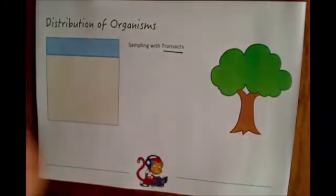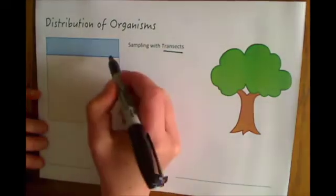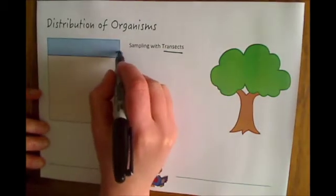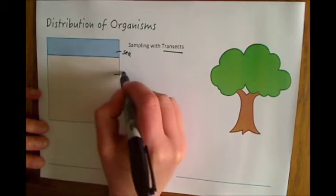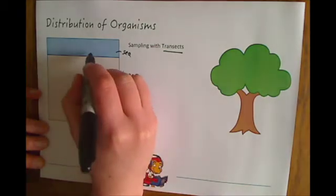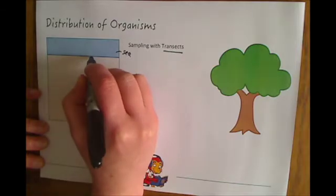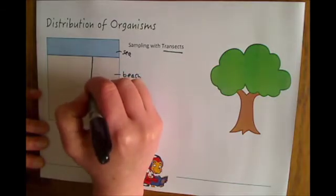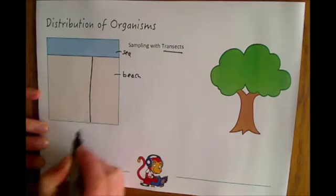A transect is when you use a measuring tape set up in a line. For example, if this is the sea and this is the beach, we might set up our transect from the edge of the sea where it meets the beach all the way up the shoreline.